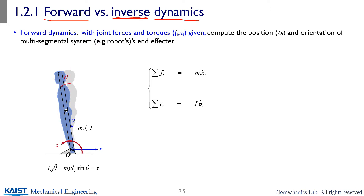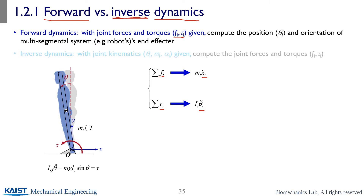To understand what inverse dynamics is, I should first explain what forward dynamics is. Forward dynamics is simply F equals MA — once your forces or torques are given, you can figure out what the resultant motion will be. So the causes are given and you figure out the result of the motion. Inverse dynamics is the opposite: when your motions are given, you're wondering what causes that motion — what are the forces generating that motion and what are the torques generating those angular motions.